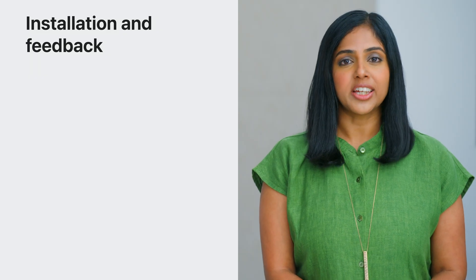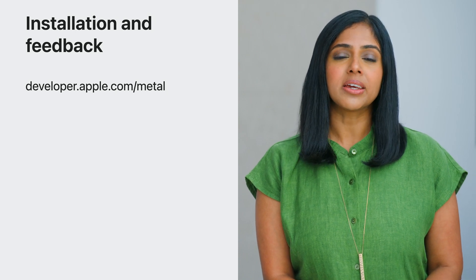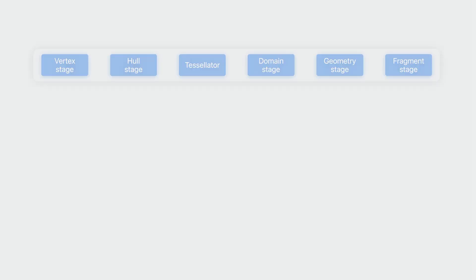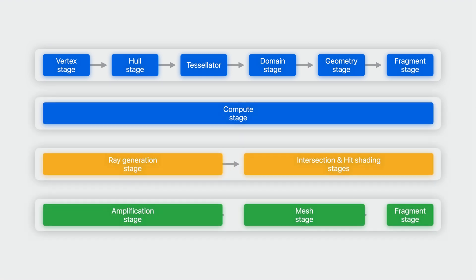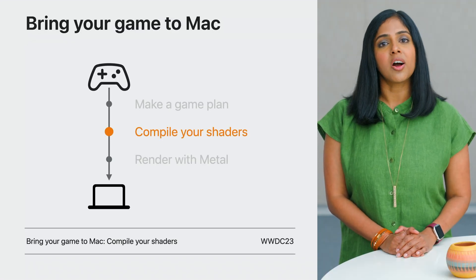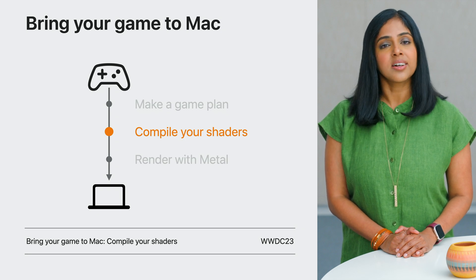To get started using the Game Porting Toolkit, just head to developer.apple.com. You'll find a package containing instructions for building and configuring the toolkit so you can begin evaluating your game. You can provide your feedback, questions, and suggestions about the Game Porting Toolkit and bringing your game to Mac using Feedback Assistant. Now that you've evaluated your graphics features and performance, take that knowledge to port your shader pipeline. You can use the Metal Shader Converter tool to convert all your game's advanced shading pipelines, including geometry, tessellation, mesh, and ray tracing stages. Compiling your shaders is a deep topic on its own, so when you're ready, watch the second talk in the series, Compile Your Shaders.